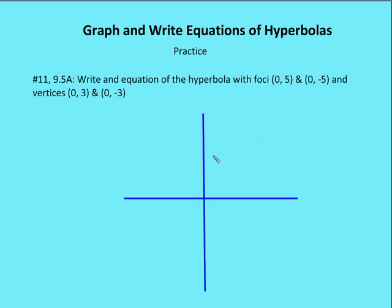On to the final question. Write an equation of the hyperbola with foci at (0, 5) and (0, -5), and vertices at (0, 3) and (0, -3). We can see that the foci and the vertices are on the transverse axis, so we know that the transverse axis is going to be a vertical transverse axis. So I'm going to have parabola branches facing up and down.